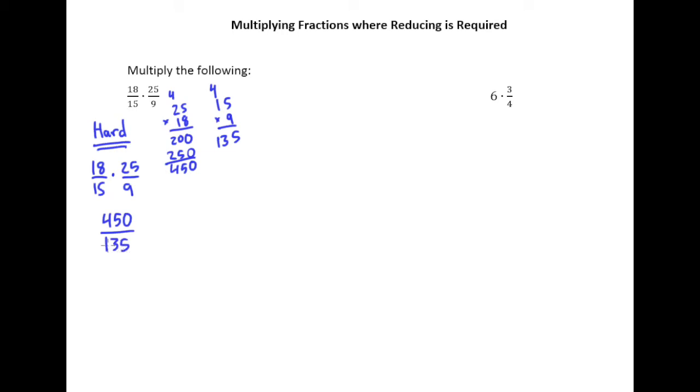But of course, I think we can agree that these are not reduced. Especially when I see the top number ending in 0 and the bottom number ending in 5, I know that I can take a 5 out of each one. So let's do that. Let's take a 5 out.